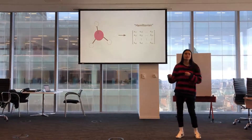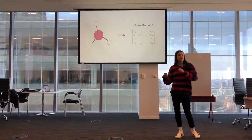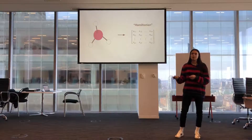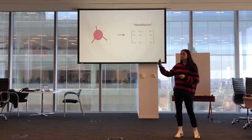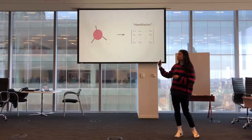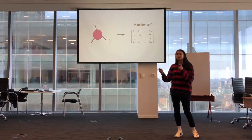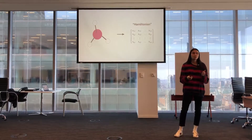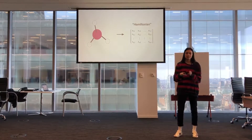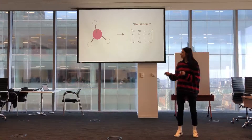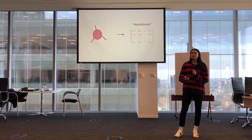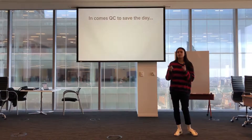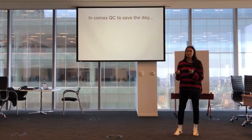This eigenvalue concept is really important because we can actually represent molecules as a Hamiltonian matrix, which is essentially a matrix that represents all the potential and kinetic energies inside of a molecule. Finding the lowest possible eigenvalue of that matrix gives us the ground state energy of the molecule, which is really important for simulating it.